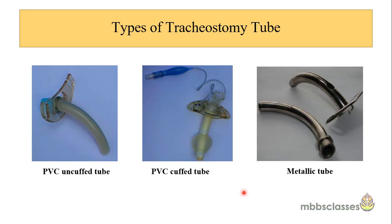Tracheostomy tubes can be non-metallic, made of polyvinyl chloride (PVC), or metallic — metallic tubes are not commonly used today but are taught for academic purposes. PVC tubes come in two varieties: uncuffed and cuffed. The cuffed tube has a balloon at the lower end which can be inflated; the cuffed variety is preferred where aspiration is expected and in cases where the patient needs ventilation.